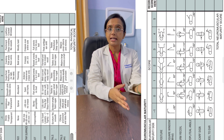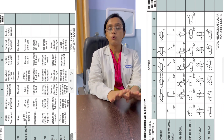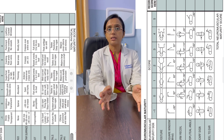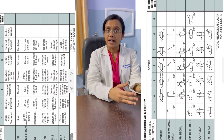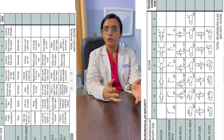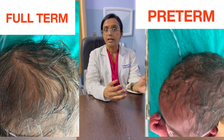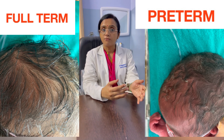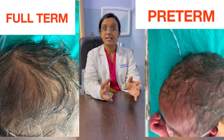The Ballard score has 12 parameters: six physical and six neuromuscular. Here I will tell you basic physical characteristics based upon which we can make a rough assessment of gestation. I'm moving from head towards the toe, which makes it easier to remember. Looking at the head first, we will look at the hair. In a term baby the hair is usually silky and you can see individual strands, while in a preterm baby the hair is very fuzzy.